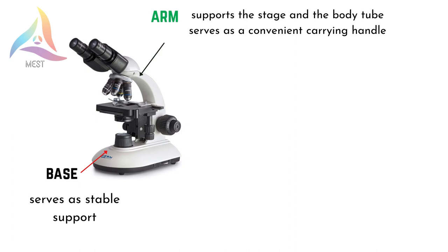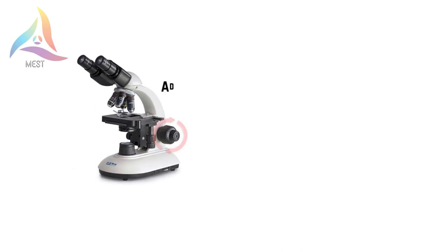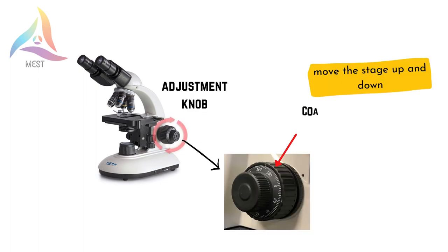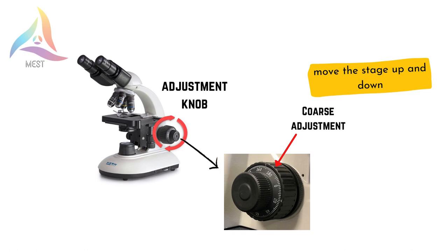The arm supports the body tube and connects it to the base, and also serves as a convenient carrying handle. The base is at the bottom of the microscope and serves as stable support. Adjustment knobs are located above the base. The coarse adjustment knob is a rapid control that allows for quick focusing by moving the objective lens or stage up and down.